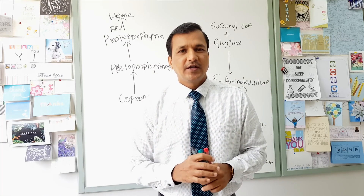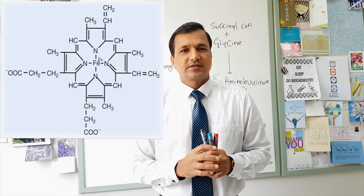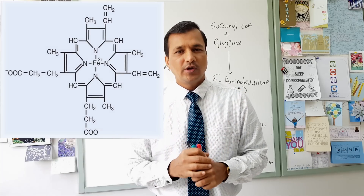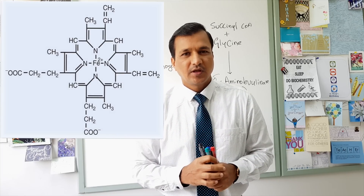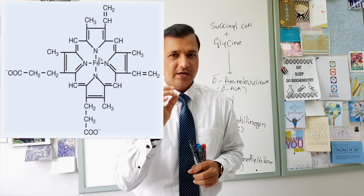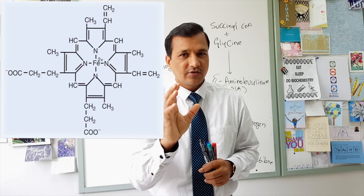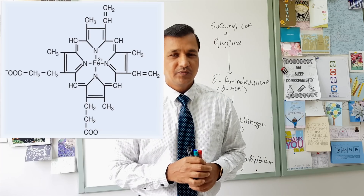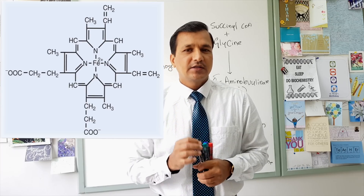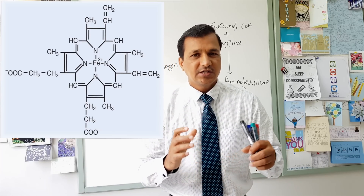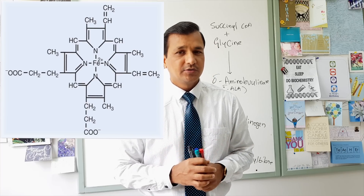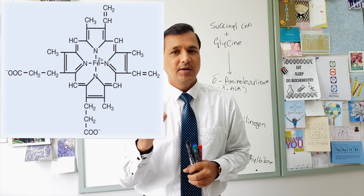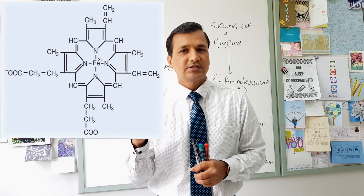Heme is a complex molecule. It has got 4 pyrrole rings and each pyrrole ring is holding onto one another by a methane bridge. Each pyrrole ring has got a nitrogen, so there are 4 nitrogens in the center, and they will be holding on to the ferrous iron. Each pyrrole ring has got 2 side chains, and the side chains in the heme molecule are methyl, vinyl, methyl, vinyl, methyl, propionate, and propionate, methyl.